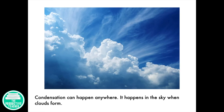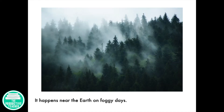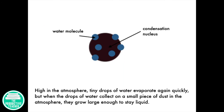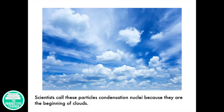Condensation can happen anywhere. It happens in the sky when clouds form, near the earth on foggy days, and on the outside of a cold glass in the summer. High in the atmosphere, tiny drops of water evaporate again quickly. But when the drops of water collect on a small piece of dust in the atmosphere, they grow large enough to stay liquid. Scientists call these particles condensation nuclei because they are the beginning of clouds.